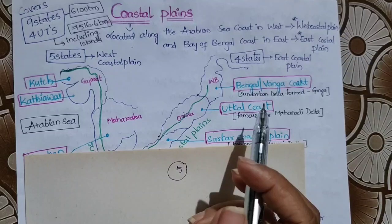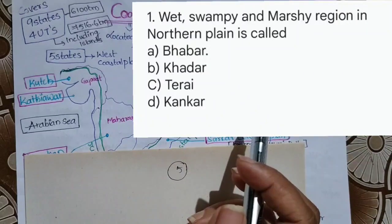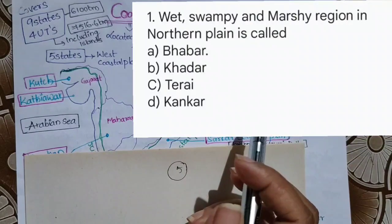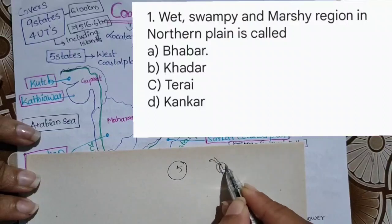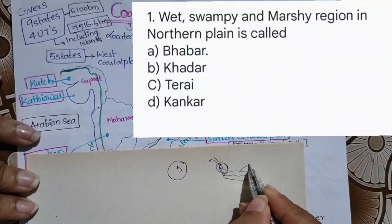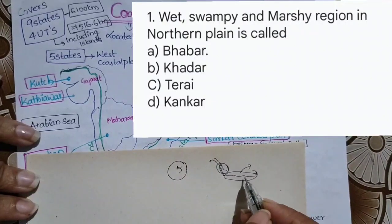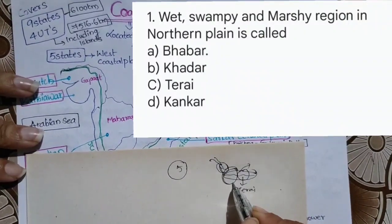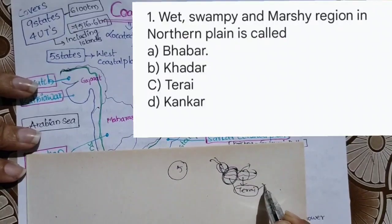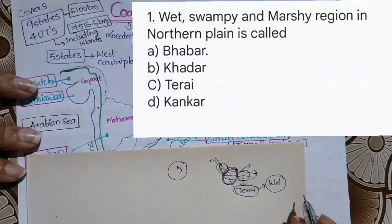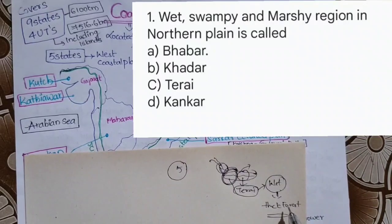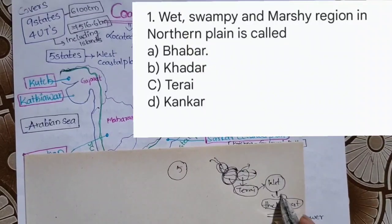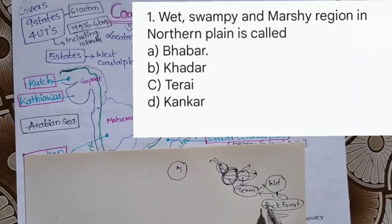The first question: the wet, swampy and marshy region in the northern plains is called — options: Bhabar, Khadar, Terai, or Kankar. We discussed how Himalayan rivers flow and deposit soil and rocks to form the northern plains. The wet and marshy place is Terai — rivers disappear in this part and reappear at Terai. That is why it is always wet, and thick forest growth can be found there. So the answer is C: Terai.